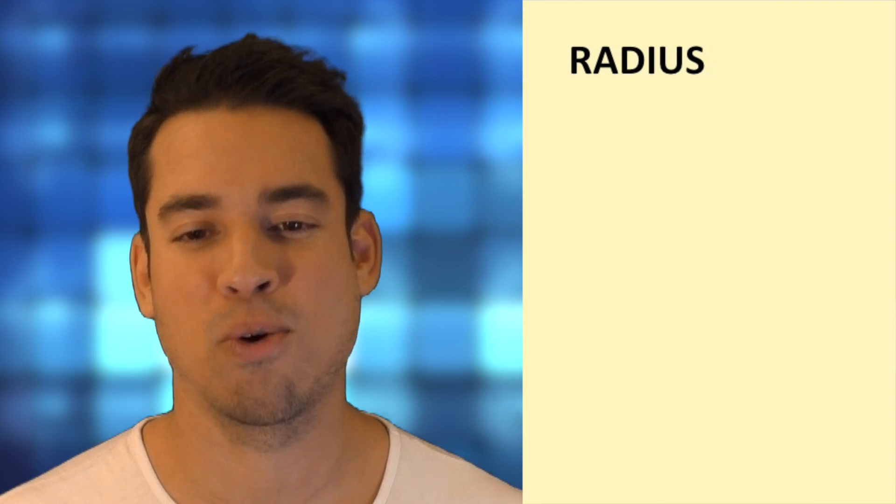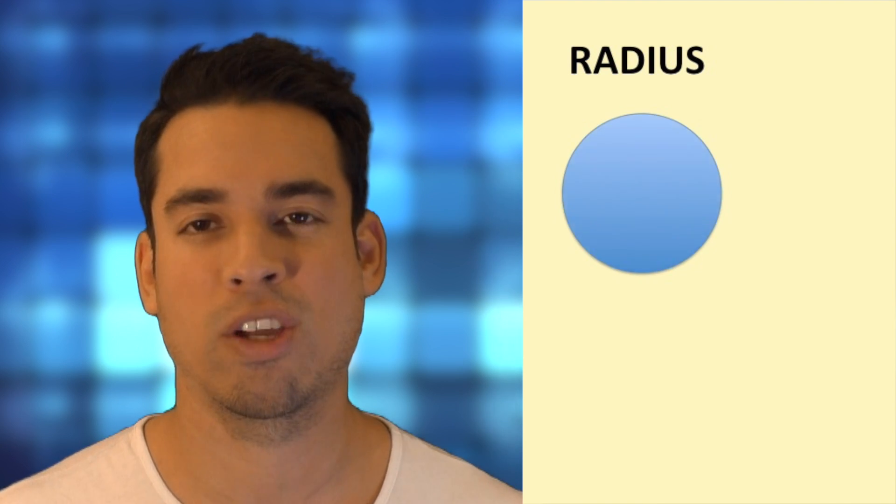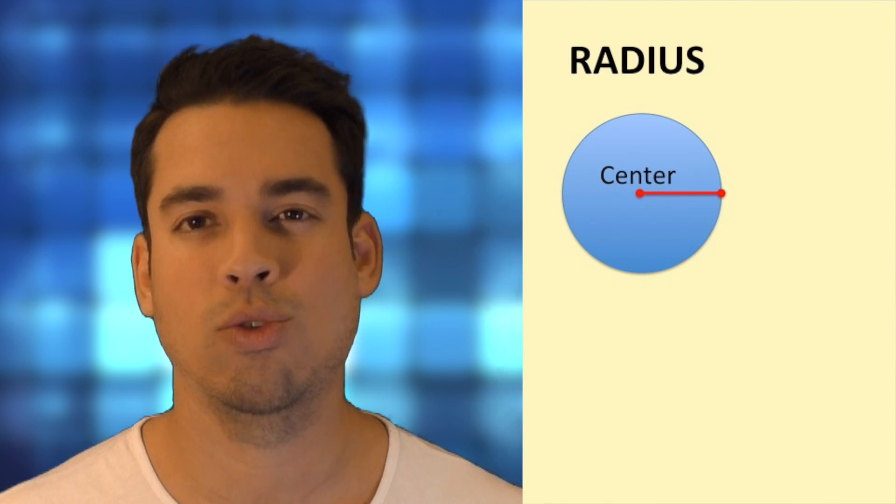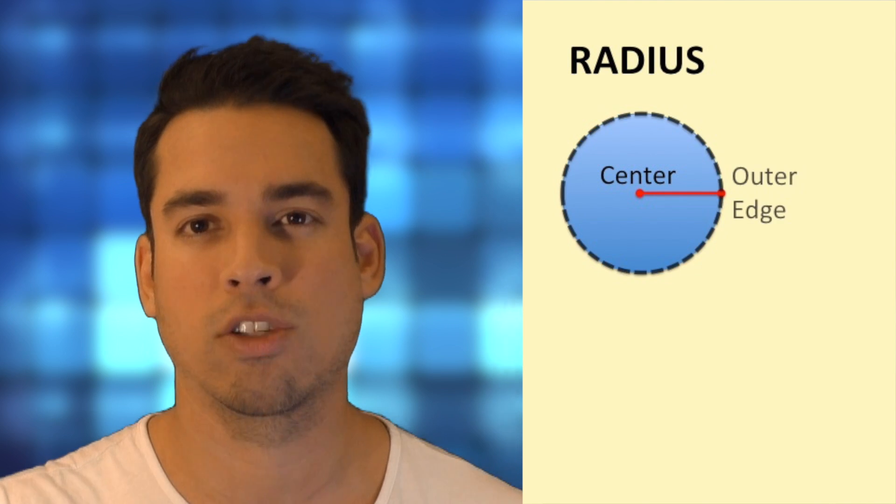When we're talking about circles, one of the most important terms that you should be familiar with is the radius. A radius, if we look at this circle here, is simply the distance from the exact center of the circle in a straight line out to the edge of the circle.